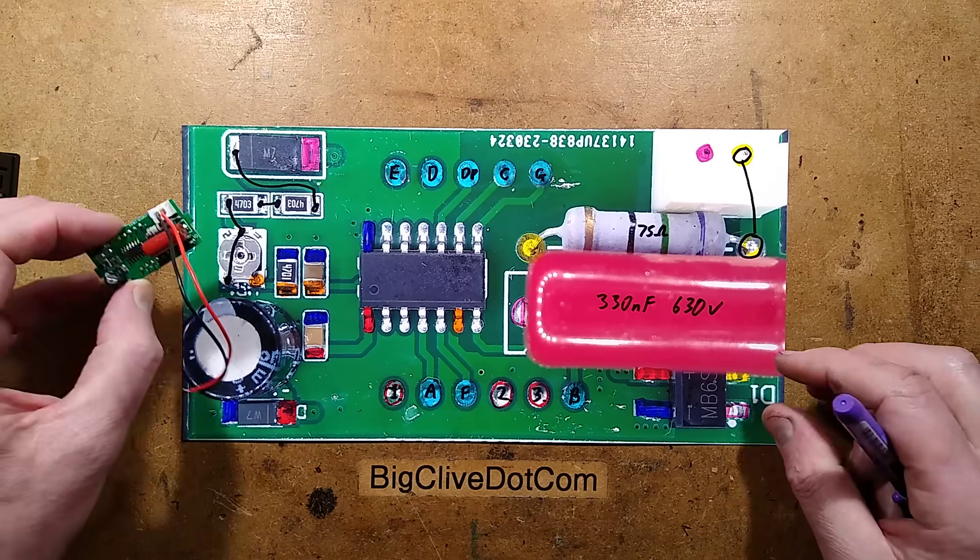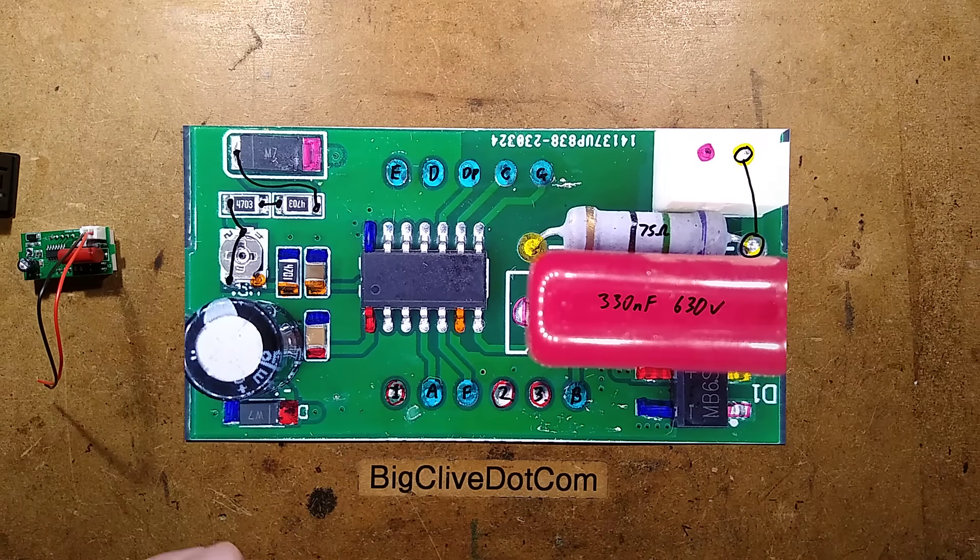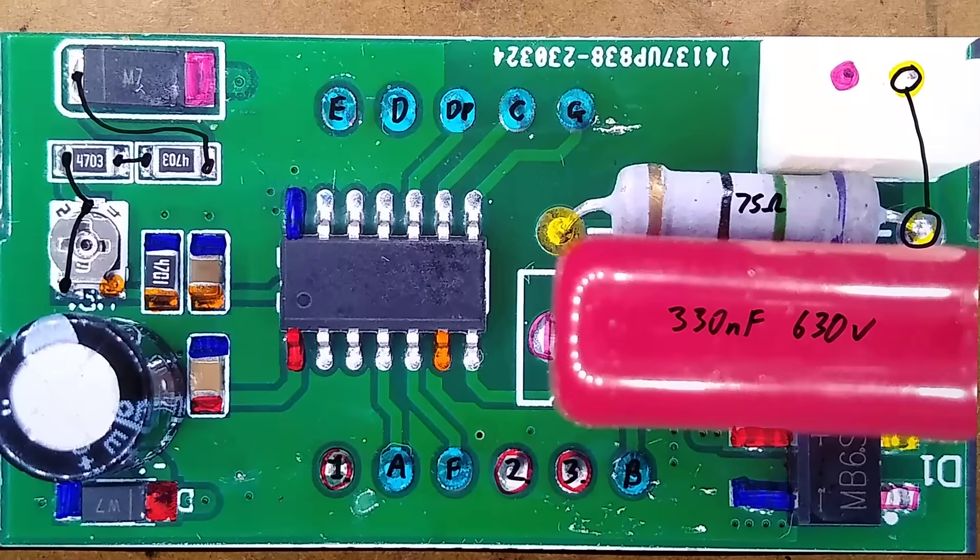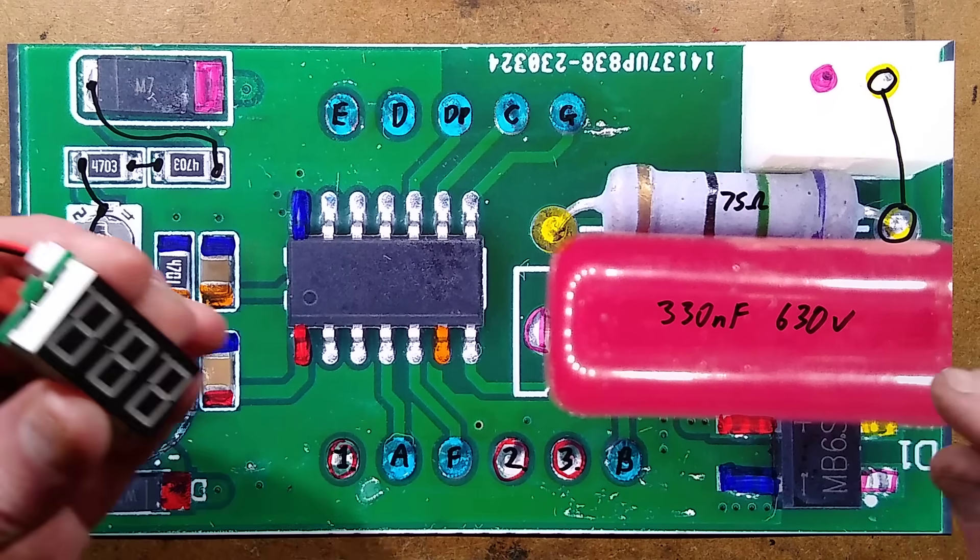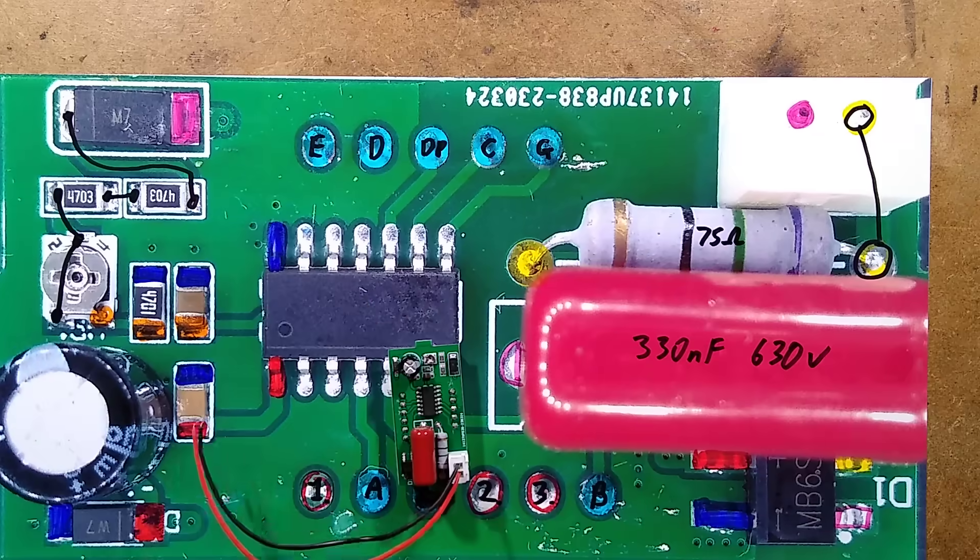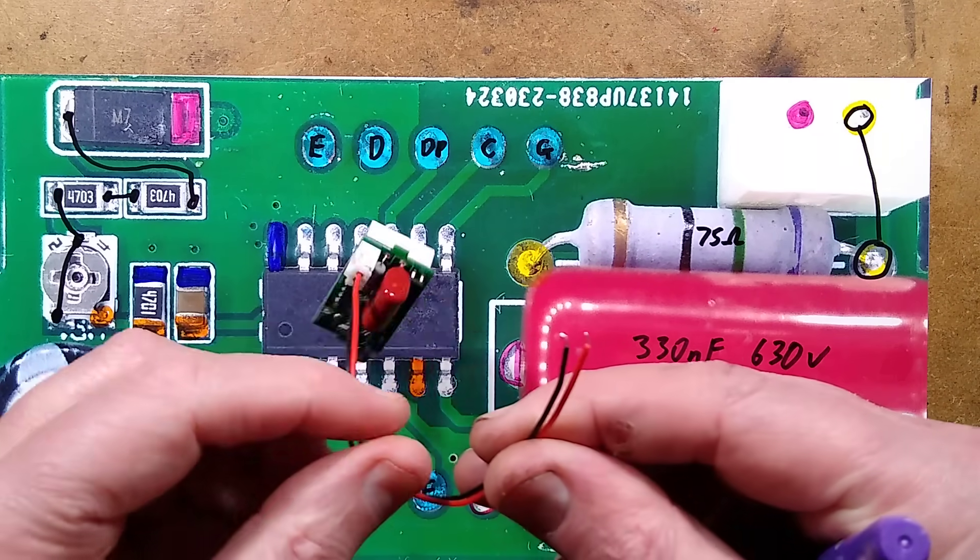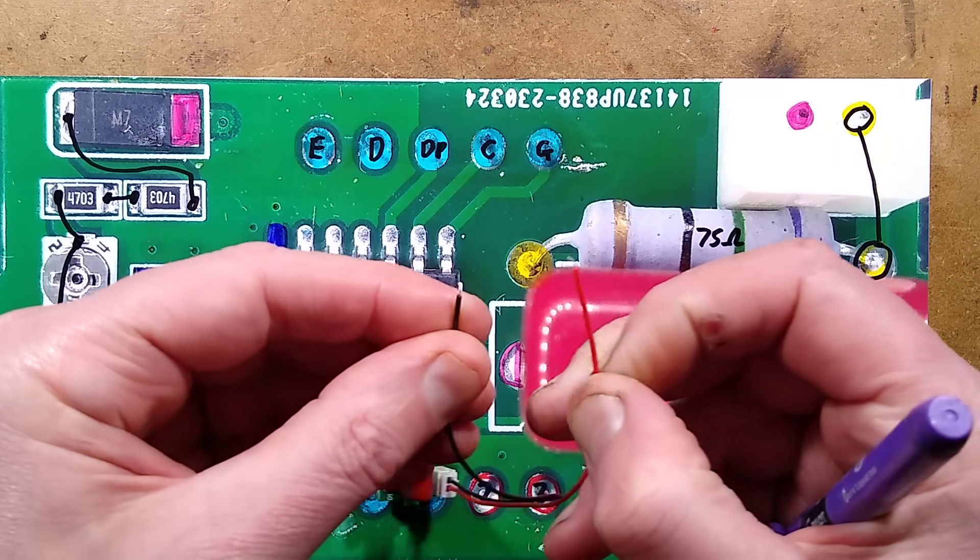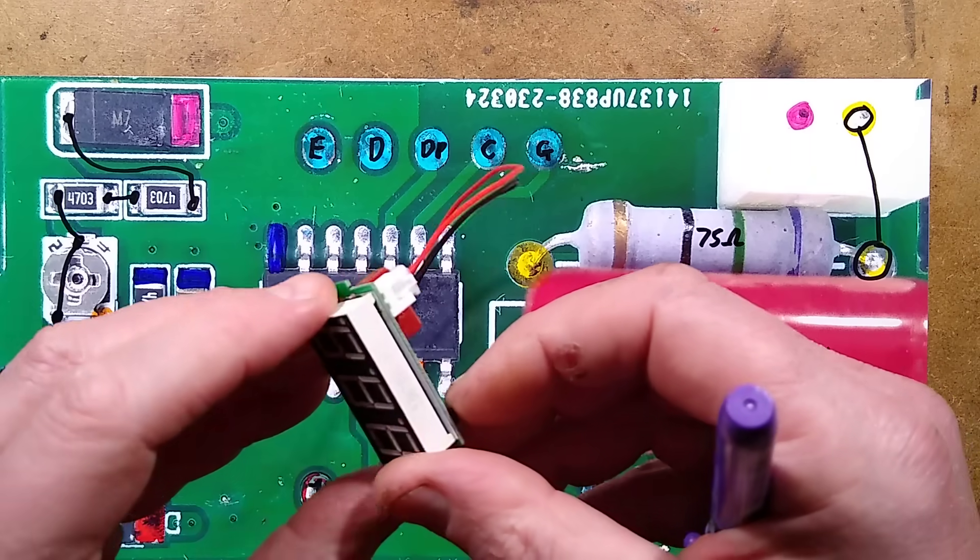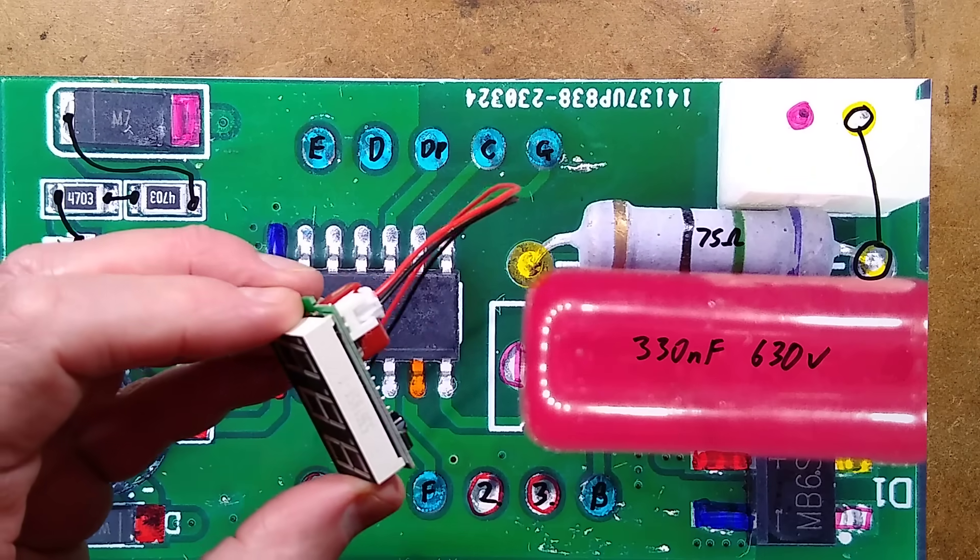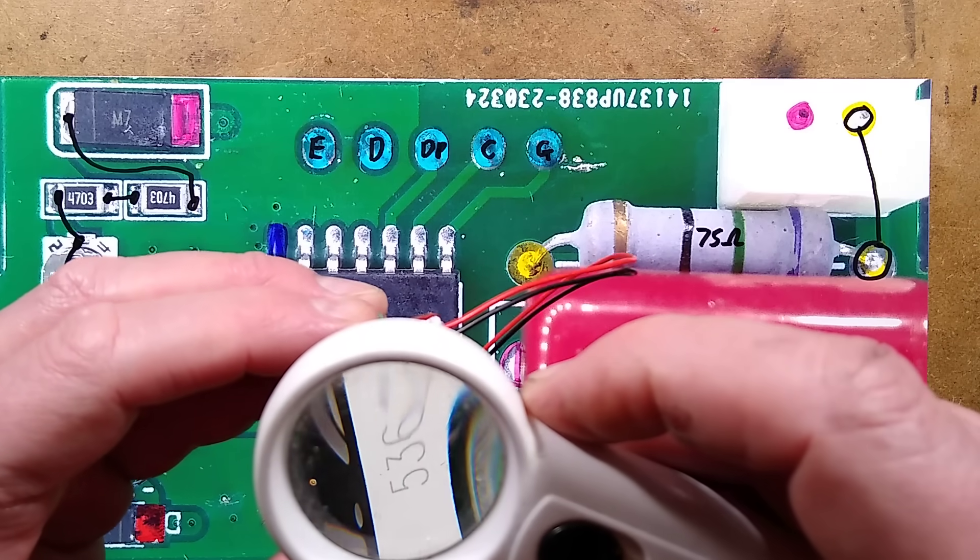Let's explore. There are some differences to the other unit, quite a few differences. Let me get down close to this and we can take a look at the components. Does this have anti-tracking slots? It doesn't have a discharge resistor across the capacitor, so that holds a bit of a charge and gives you a zing.